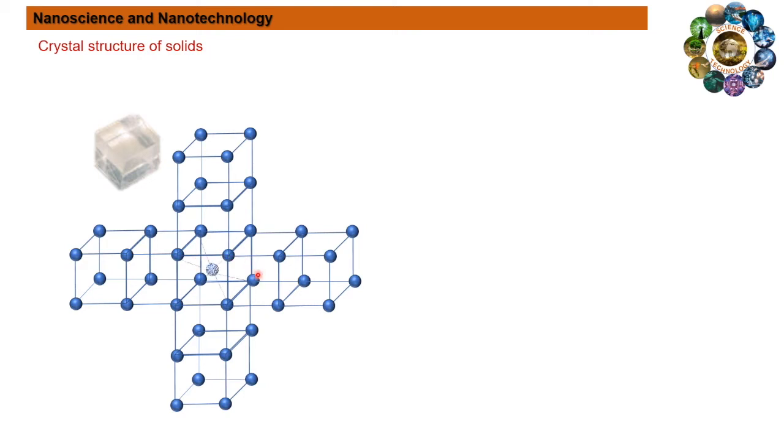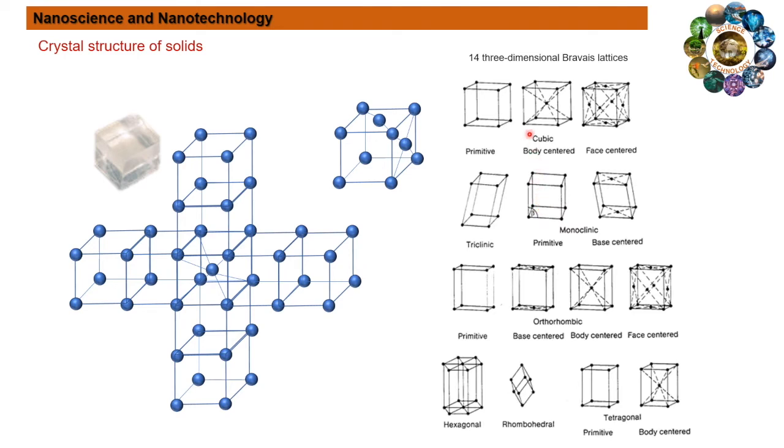This is a simple cubic crystal. If the structure has an additional atom at the base center of the cube, that is called the base-centered cubic structure. Or if an additional atom at each face of the cube, it is called the face-centered cubic structure. So depending on the lattice arrangement and angle between the lattice planes, the structures are classified.